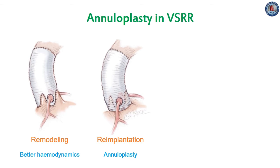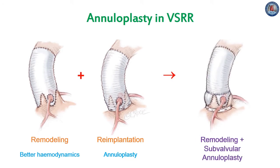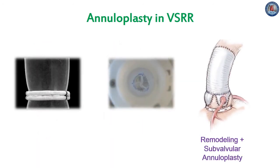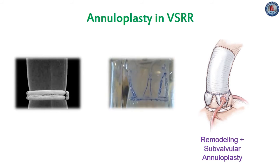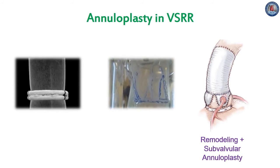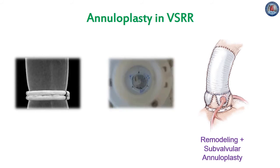However, the re-implantation technique suffers with regards to hemodynamic effects, showing loss of vortical flow, risk of cusp impact on the tube, and rapid valve closure. We have combined the advantages of both techniques to carry out a remodeling plus subvalvular annuloplasty. This gives us superior hemodynamics with regards to vortical flow formation and preserved root expansibility.